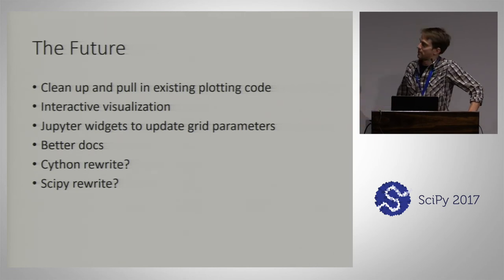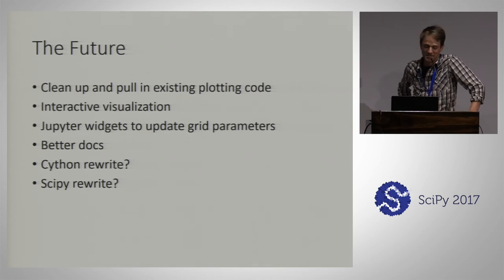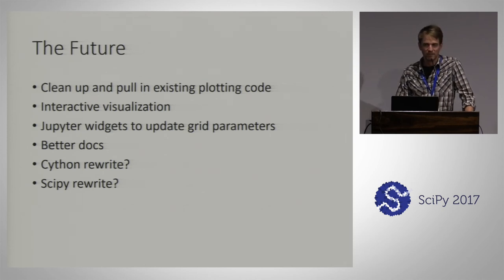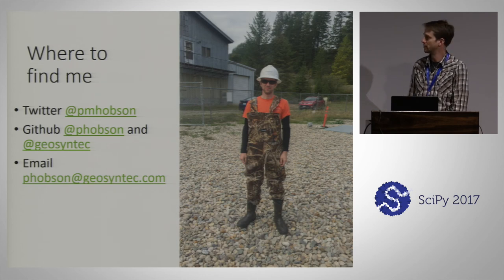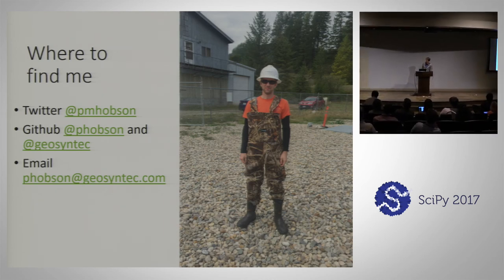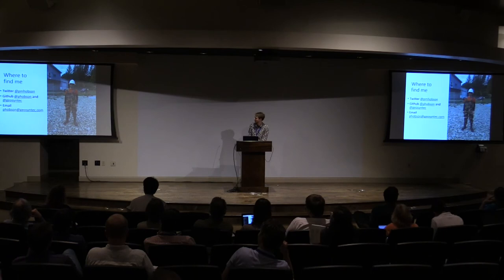This is my roadmap for these tools, which is really a roadmap for any open source library: clean up and pull in code from the side, interactive plotting, Jupyter widgets, better docs. I've considered trying to rewrite it in Cython, but I don't know enough about C to work effectively in Cython, and I think SciPy has all the solvers we need, but I don't know if I'll be able to find funding. You can find me on Twitter at pmhopson and GitHub at phopson — that photo is from the field where the crew only gets one pair of waders and you have to buy them for the tallest person.